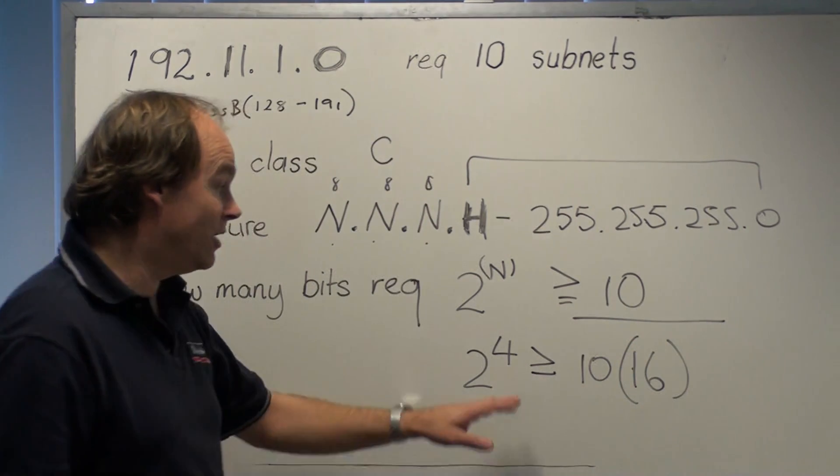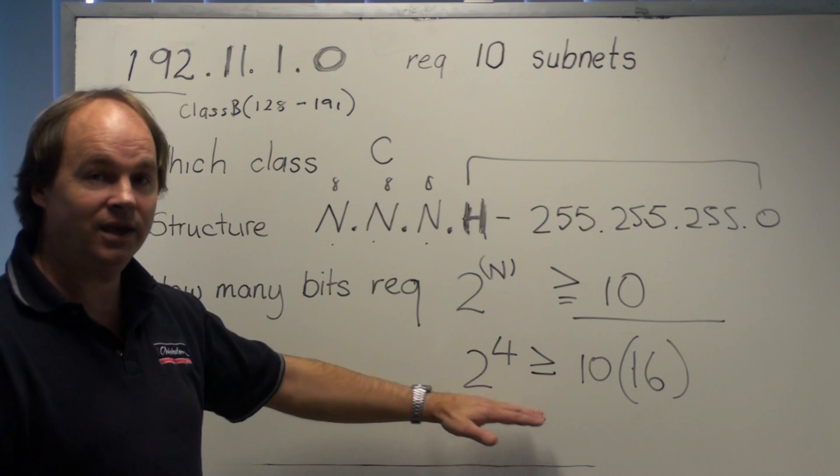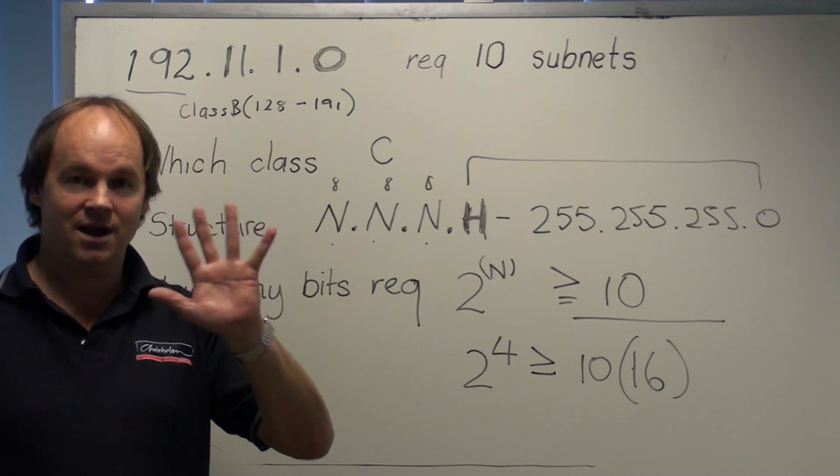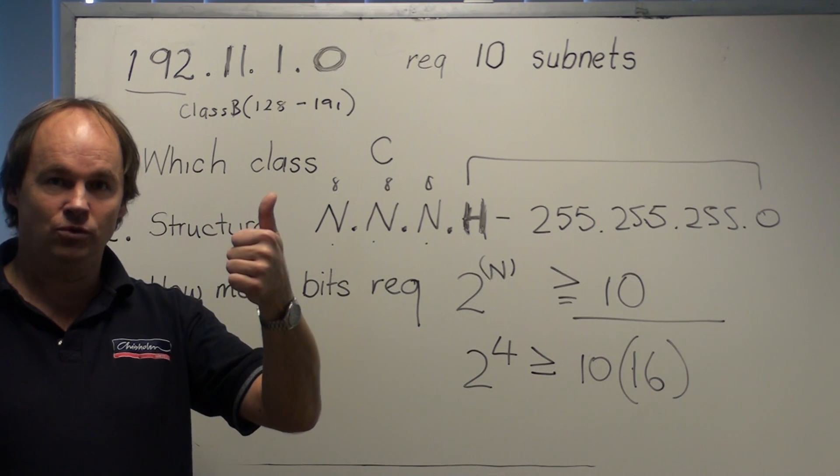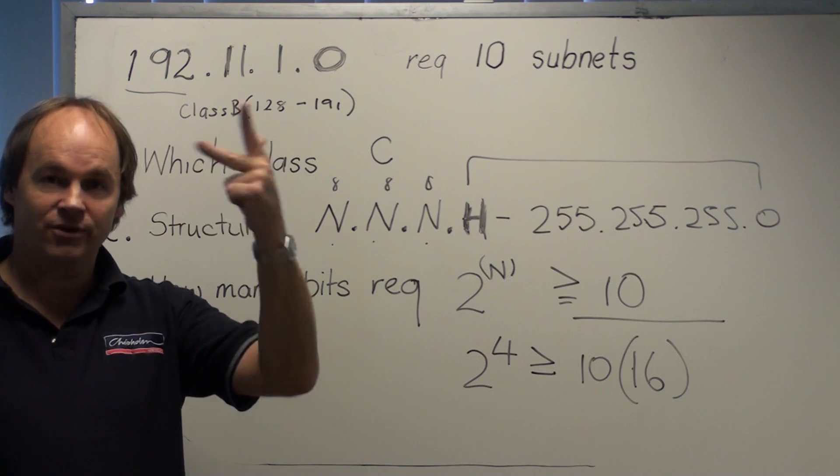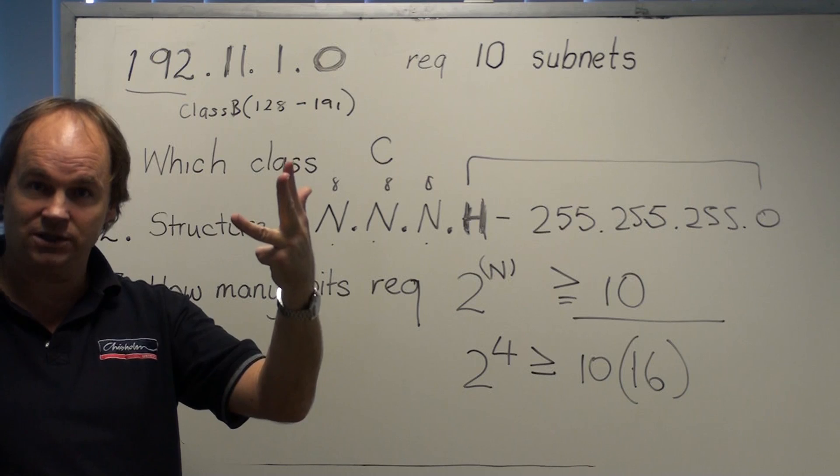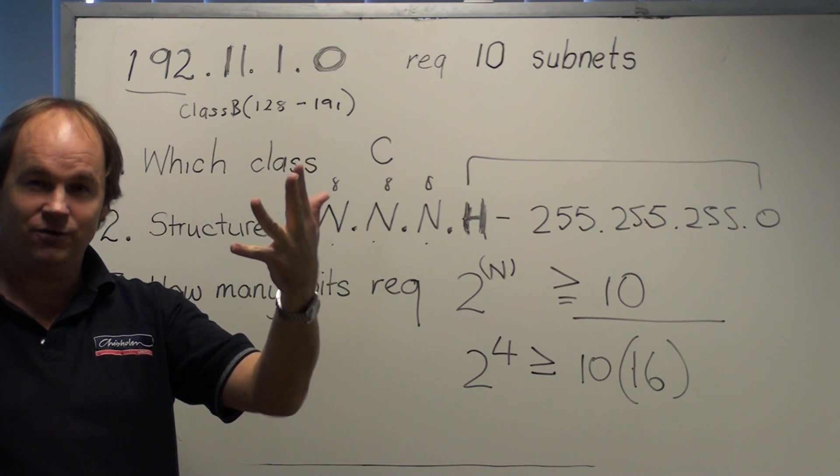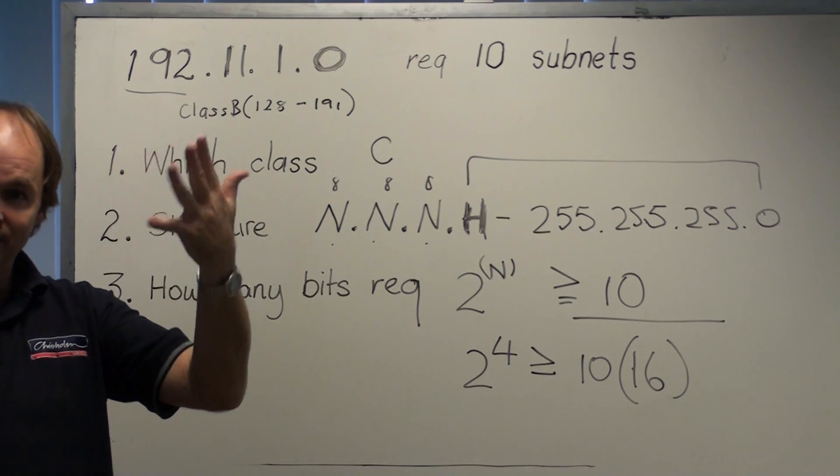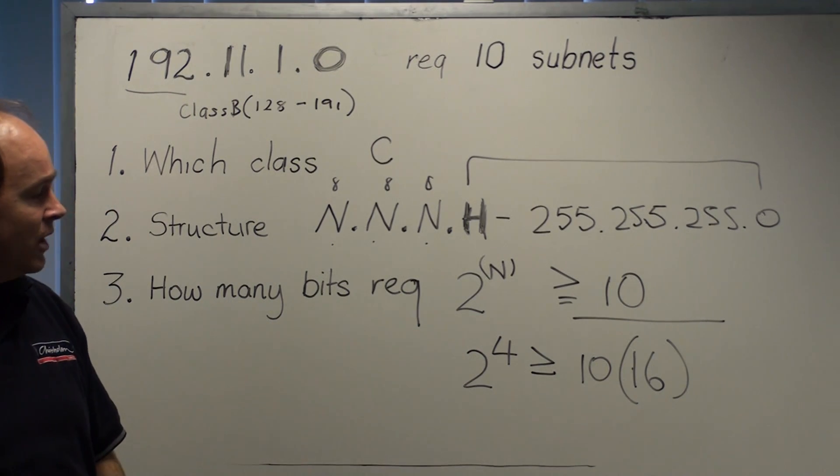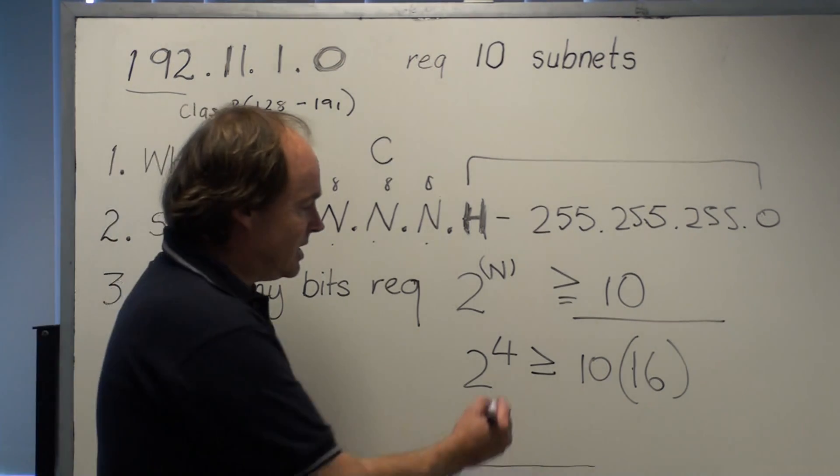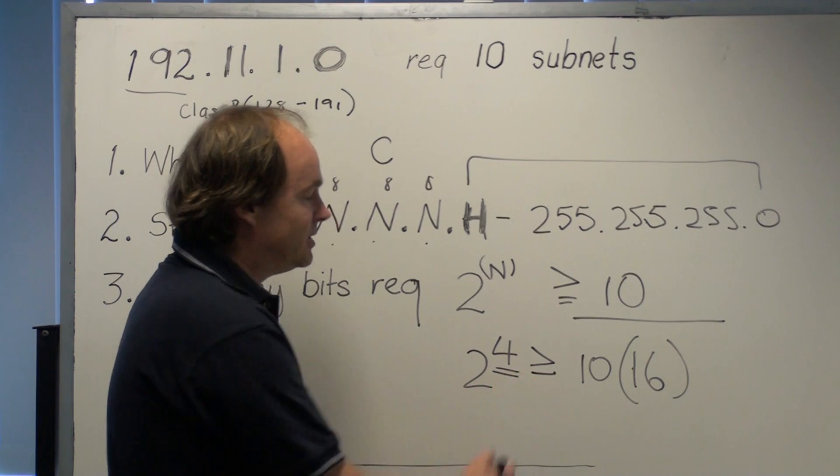So we're satisfying this formula. Again I say use your fingers. Start off simply: 1 finger is 2, 2 is 4, 3 fingers is 8. 2 to the power of 3 is 8, 2 to the power of 4 is 16, 2 to the power of 5 is 32. So it's just fingers. Fingers equal bits. And you can quickly get to that scenario here. So what we've ascertained is we need to borrow 4 bits.